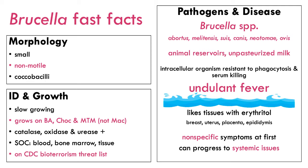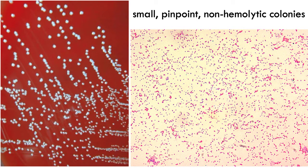Growth-wise, Brucella produces very small, pinpoint, non-hemolytic colonies. When I say pleomorphic and use the term bacilli very roughly, it's because the organism doesn't look very bacilli at all — it's much more coccobacilli than bacilli. Many of these organisms are also not good at gram staining and retain dye very poorly. That's the gist of the Brucella species.